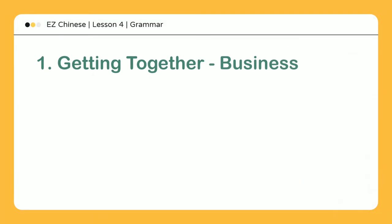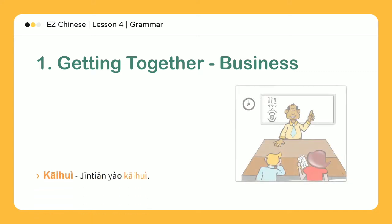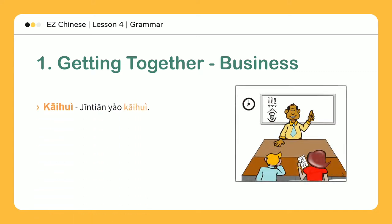Getting together — Business. The following examples show Hui as being related to business meetings. 开会: 今天要开会 — To hold a meeting. Today we will have a meeting.